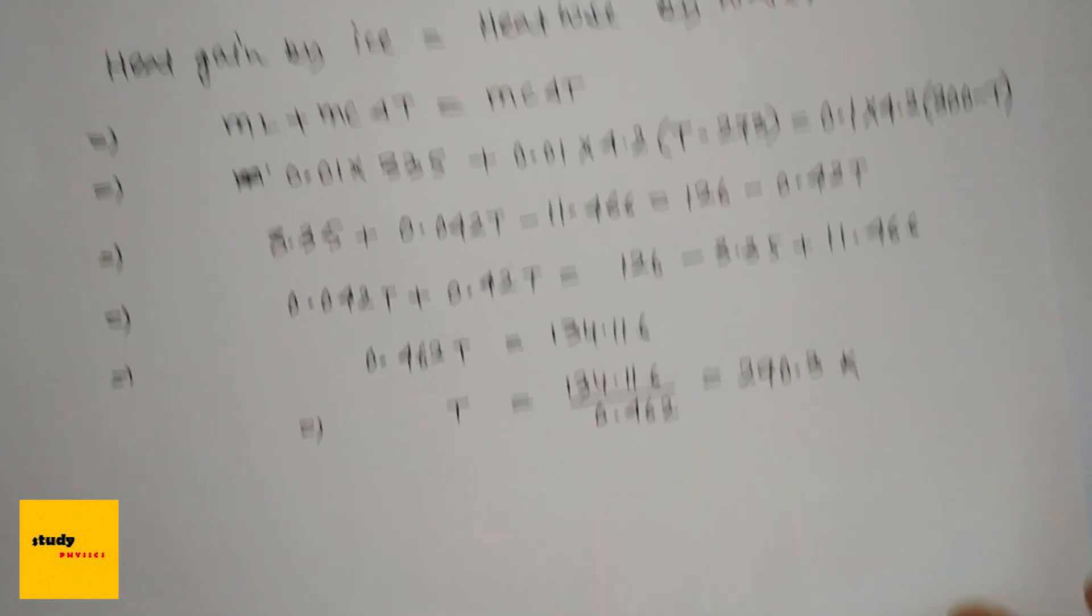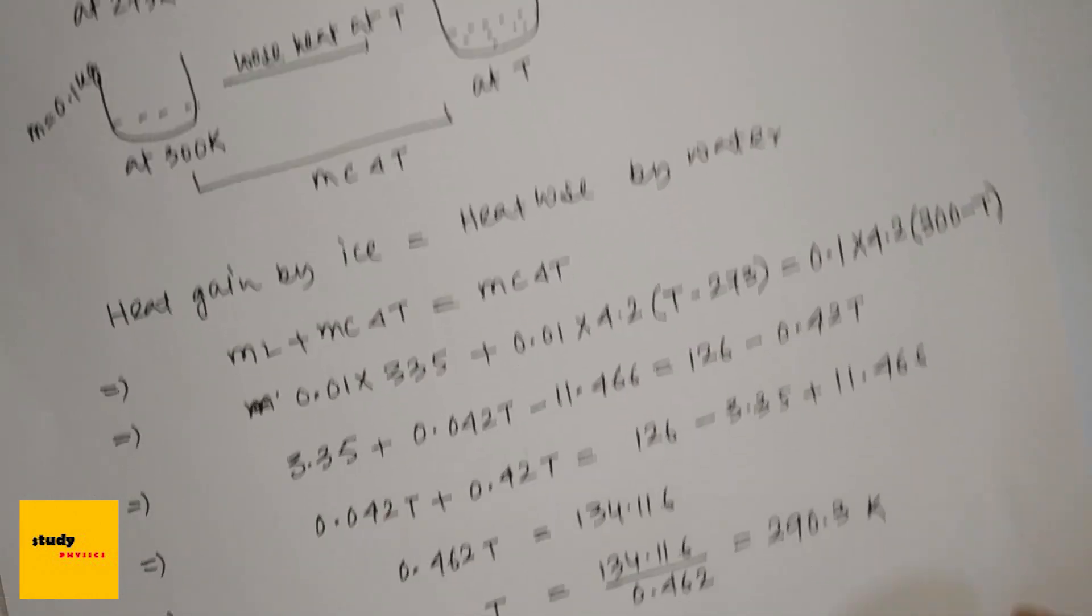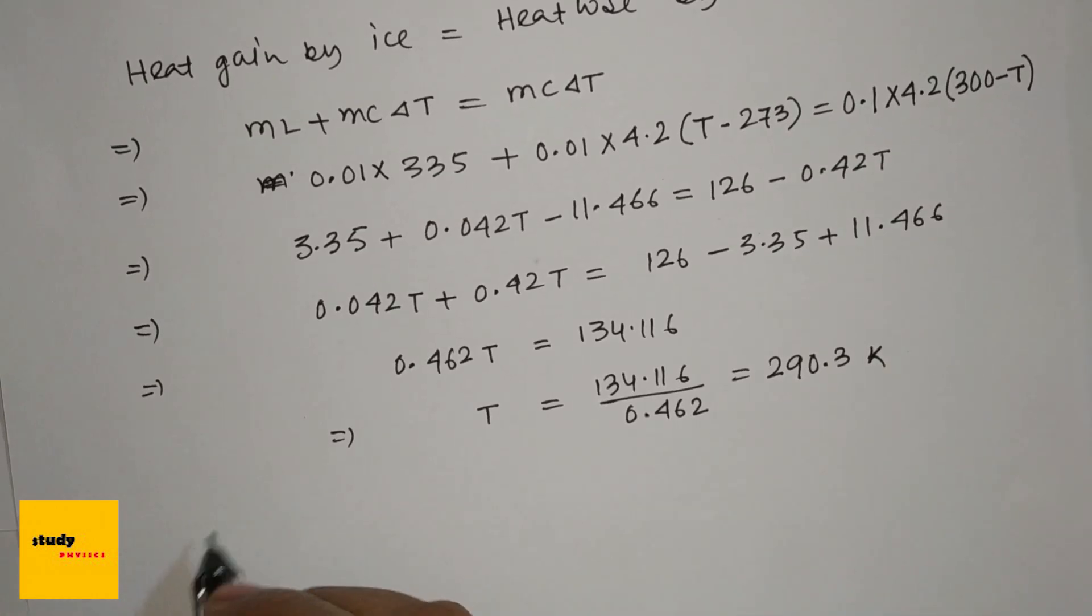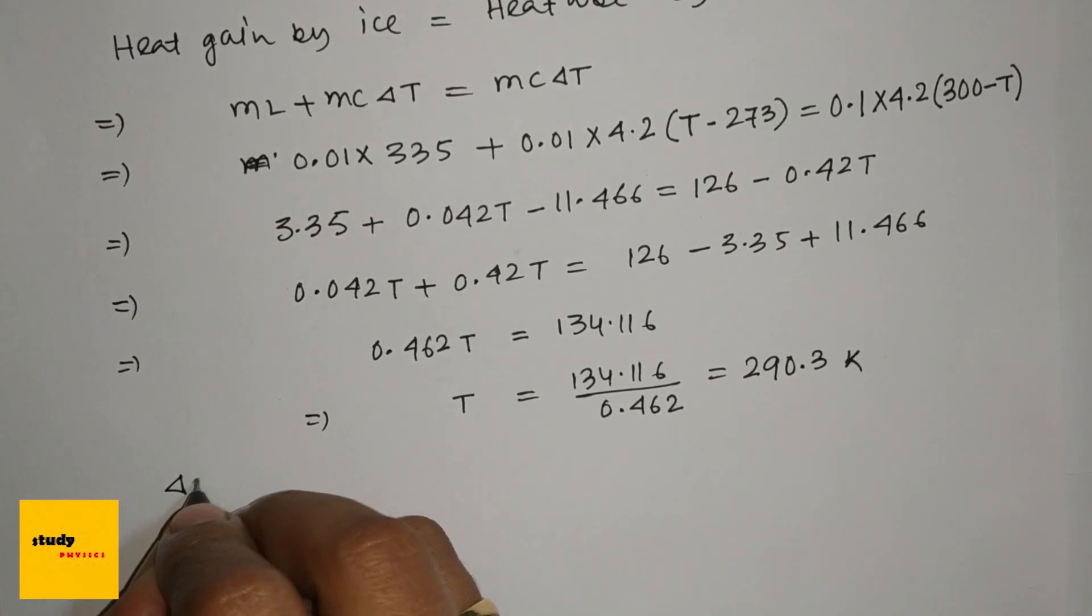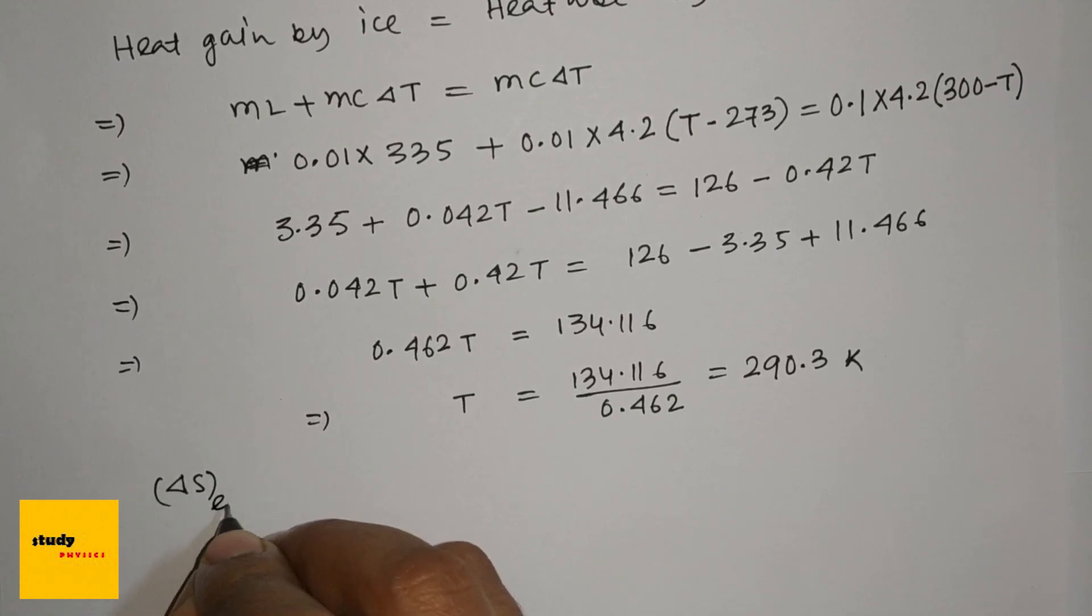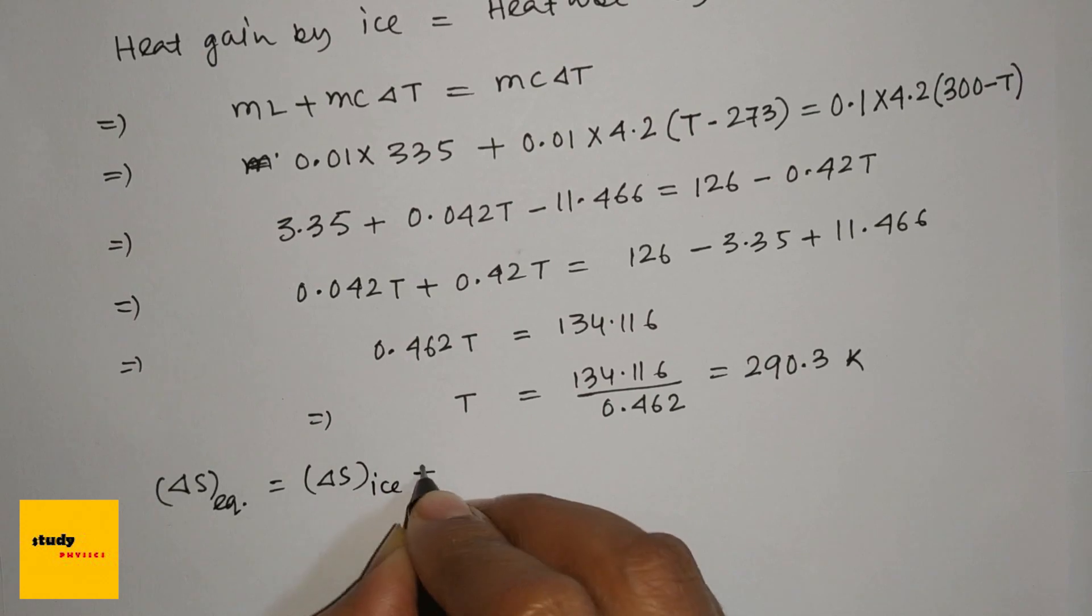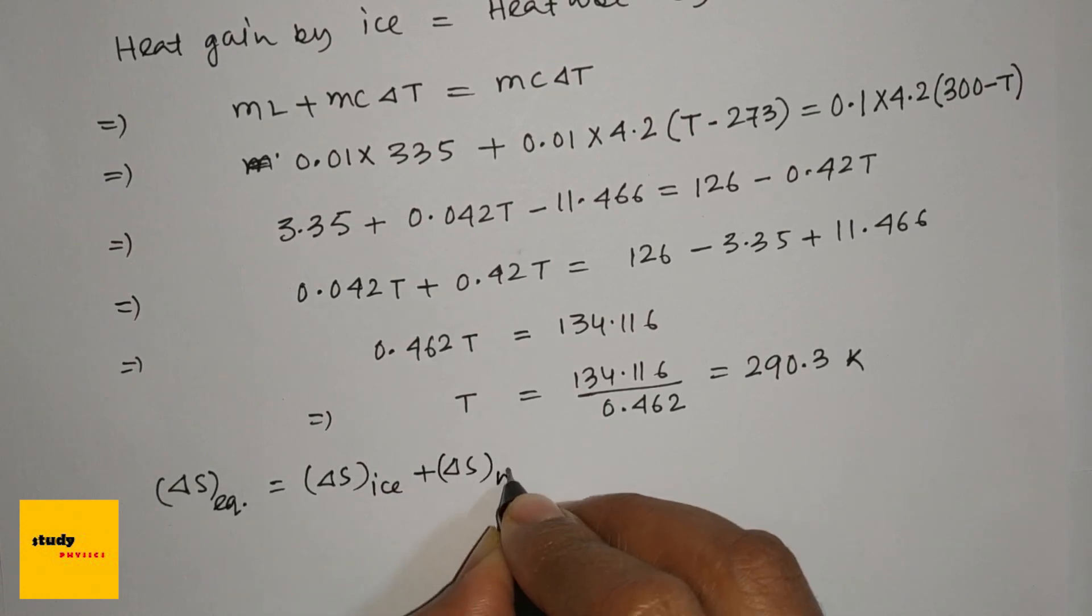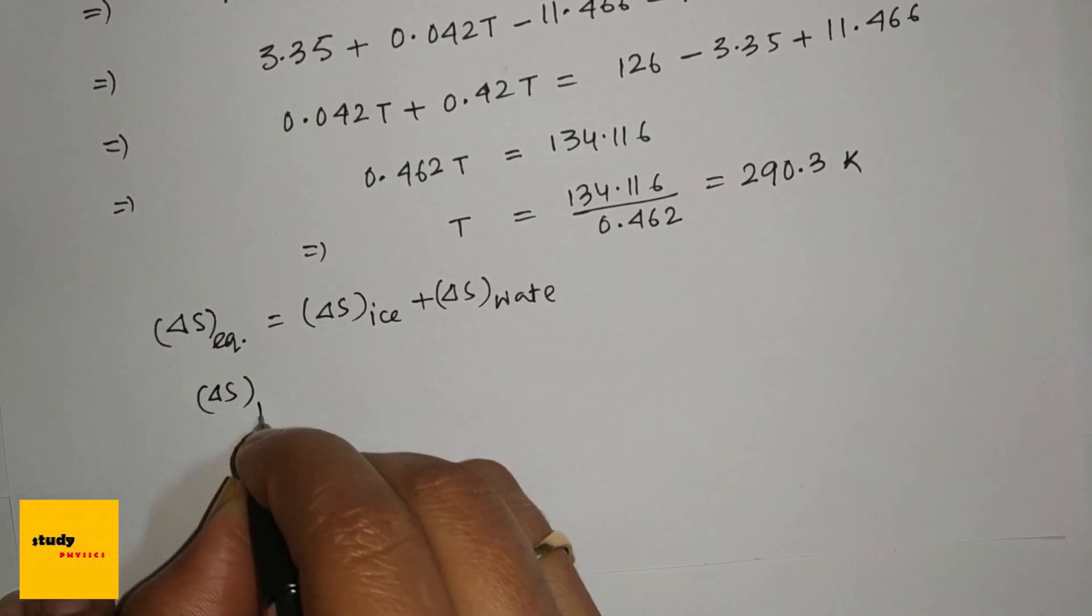So now on attaining thermal equilibrium, the change in entropy of the system in joules per Kelvin. In thermal equilibrium, we know that delta S equilibrium equals delta S ice plus delta S of water.